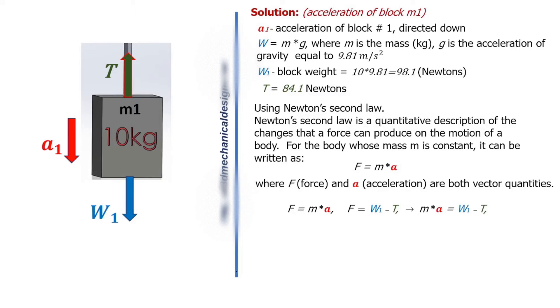A equals W1 minus T divided by M. A equals 98.1 minus 84.1 divided by 10. Acceleration of Block M1, A equals 1.4 meters per second squared.